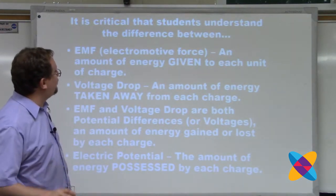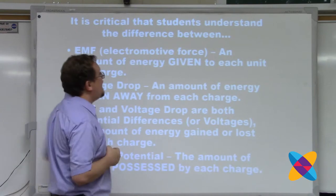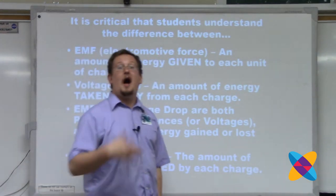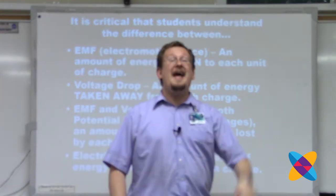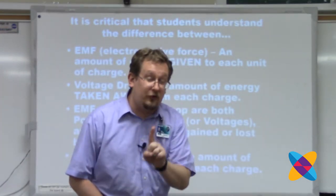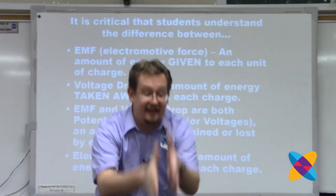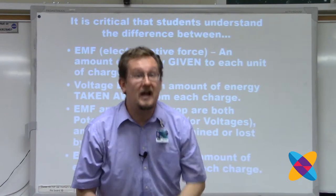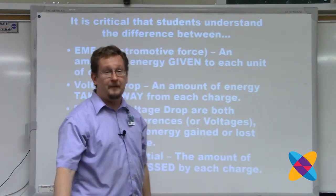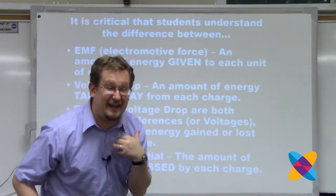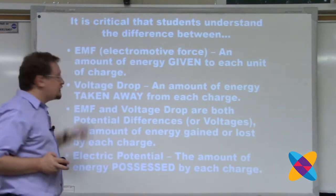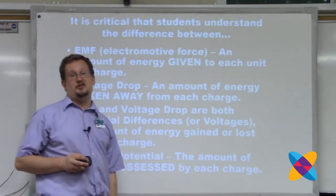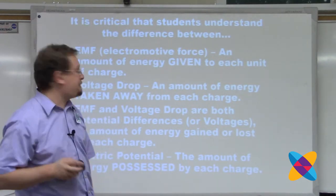EMF stands for electromotive force — the amount of energy that is given to every unit of charge. A nine-volt battery has an EMF of nine volts: every coulomb that goes through the battery is given nine joules of energy. EMF is about the charges receiving energy. Voltage drop is the opposite — it's about charges losing or giving up their energy, which happens in resistors.